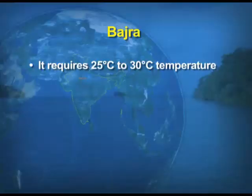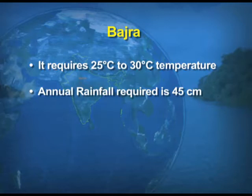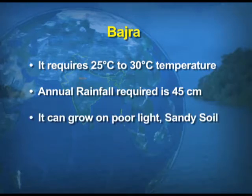Another important food crop is Bajra. It serves as food for poor people and fodder for animals — similar to Jowar. The people living in dry areas enjoy Bajra roti with chach and curd. Temperature required is 25 to 30 degrees Celsius, and the annual rainfall required is also very low — only 45 centimeters. Bajra can grow on poor, light, sandy soil — soils not rich in nutrients.